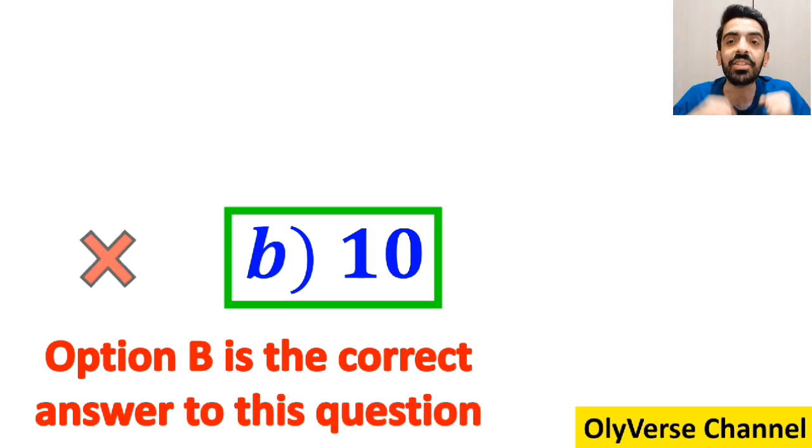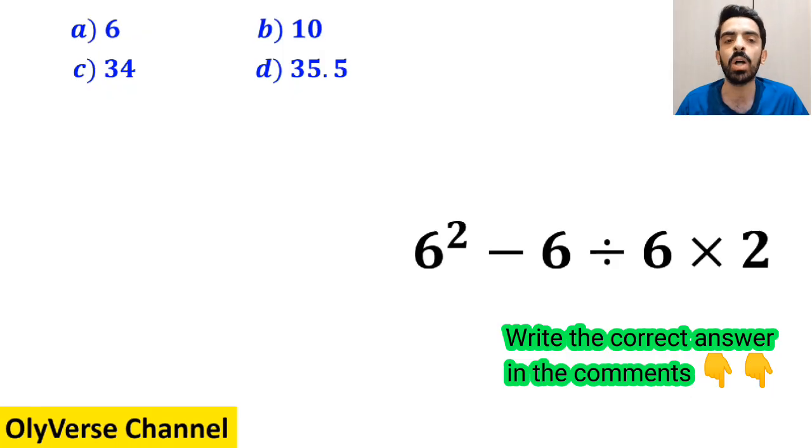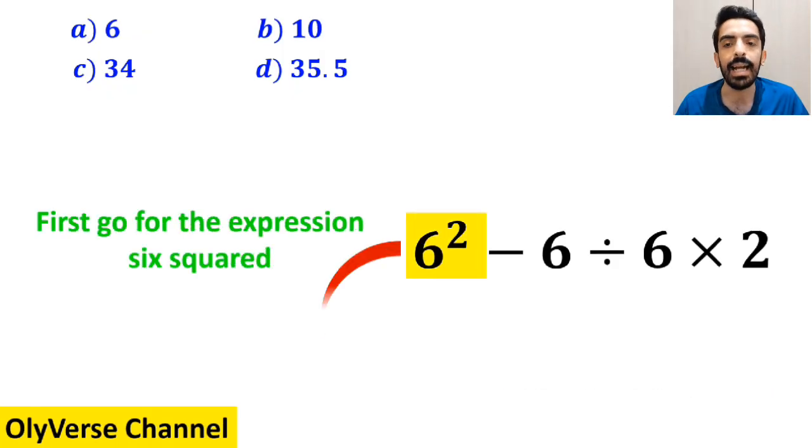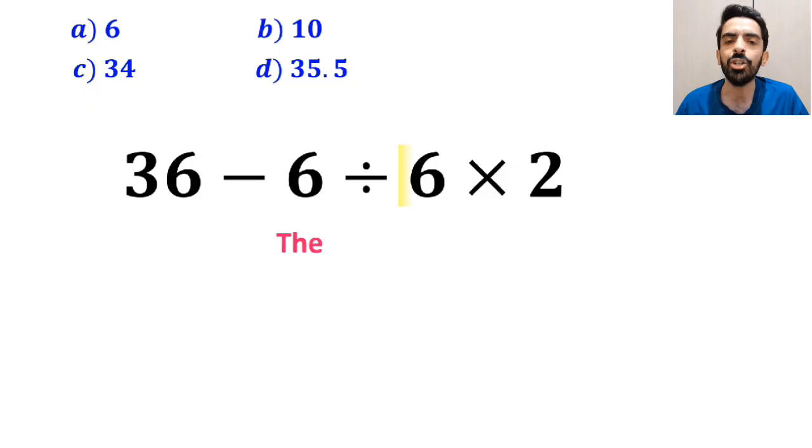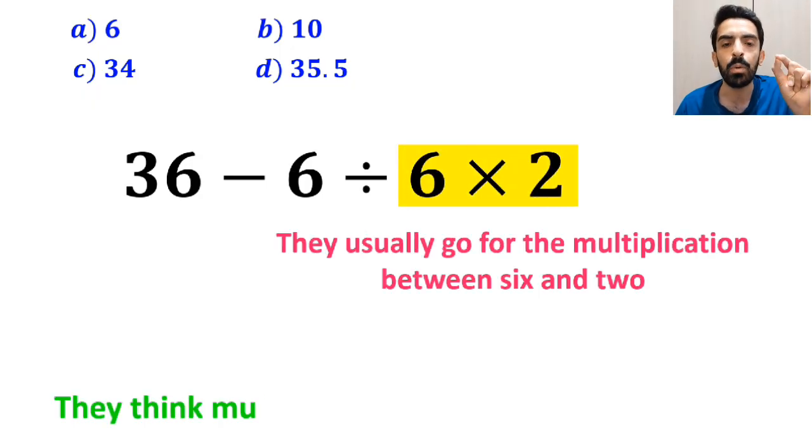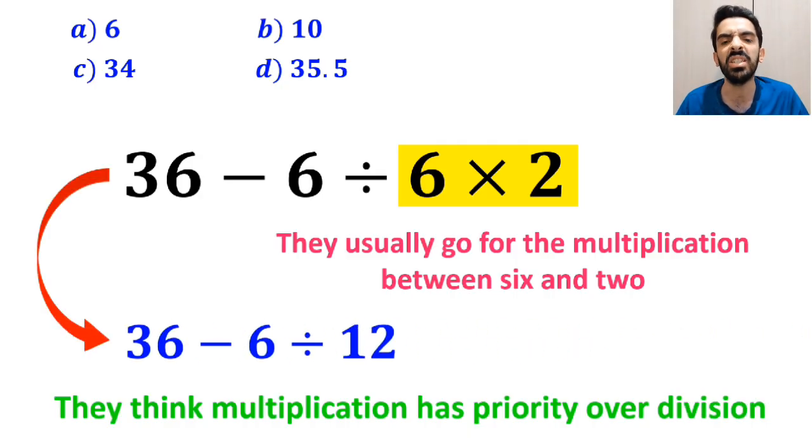Also, some other people to solve this problem, first go for the expression 6 squared and simplify it to 36 minus 6 divided by 6 times 2. In the next step, they usually go for the multiplication between 6 and 2, because they think multiplication has priority over division. So they rewrite this expression as 36 minus 6 divided by 12.